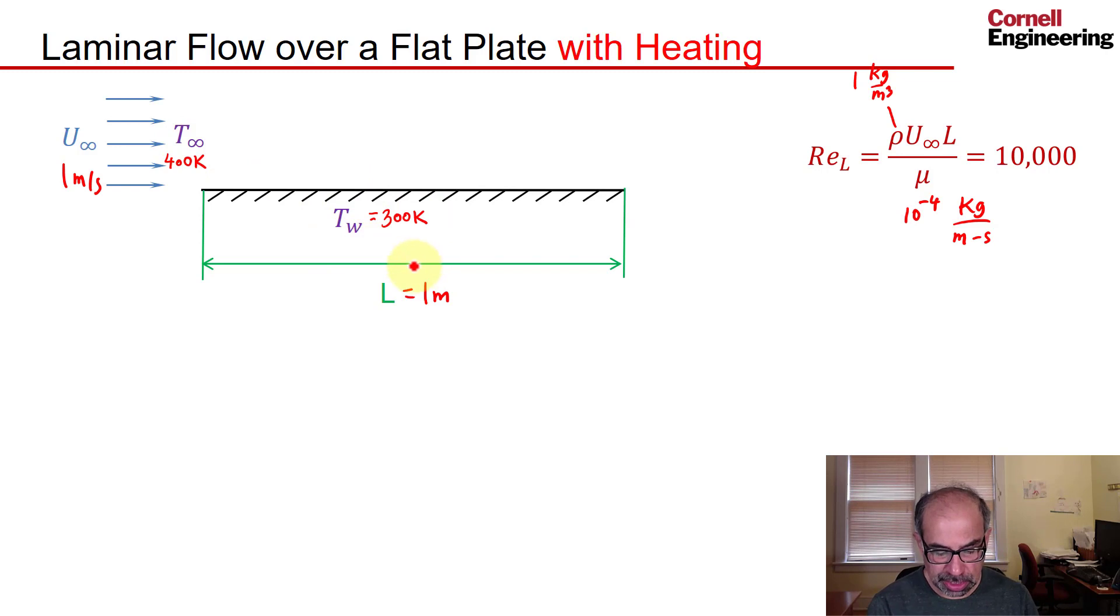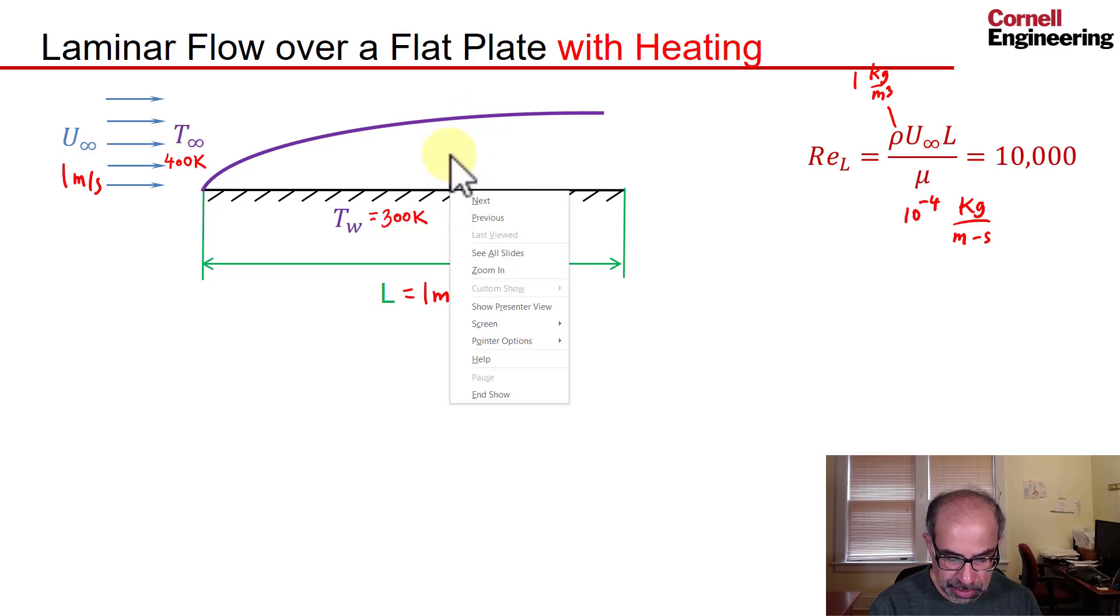Due to this temperature difference, we are going to get a thermal boundary layer, which is similar to the velocity boundary layer. Within the thermal boundary layer, the temperature will transition from the value at the wall to 99% of the free stream temperature value.